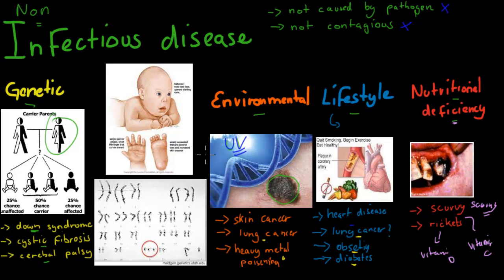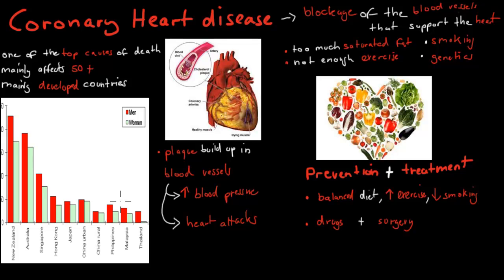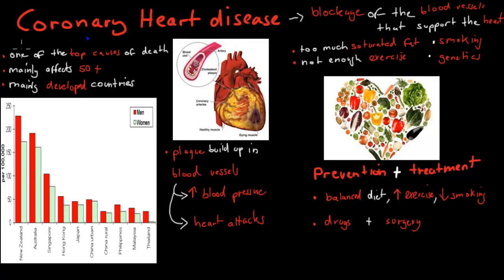The disease covered in more detail is heart disease — specifically coronary heart disease. Coronary heart disease refers to a blockage of the blood vessels that supply blood to the heart. The heart is a muscle and needs oxygen and carbon dioxide removal to function. If there's a blockage in those coronary blood vessels, the heart tissue dies and the heart can't pump anymore. Coronary heart disease is one of the top causes of death overall. It mainly affects people who are 50 plus, but the plaque buildup starts very young and gets worse with age.